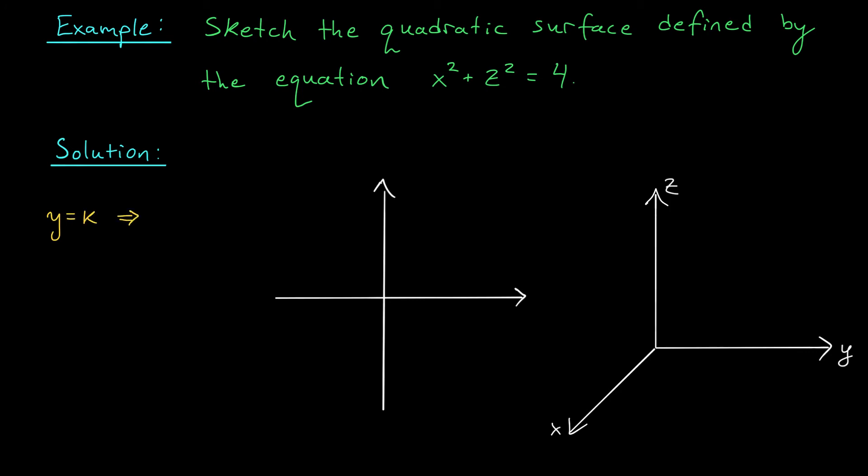Well, by setting y equal to k, we get exactly the same expression: x² + z² = 4. But this is meant to describe a 2D curve. In fact, in the x-z plane, it describes a circle of radius 2.